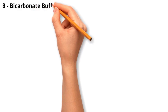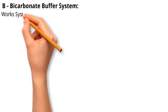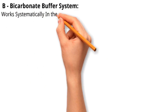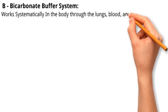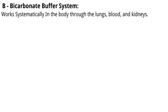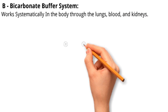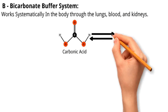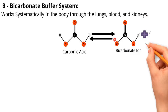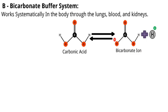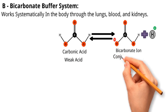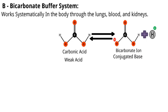The bicarbonate buffer system works systemically in the body through the lungs, blood, and kidneys. This system involves the equilibrium between carbonic acid and bicarbonate ions. Carbonic acid acts as a weak acid in the buffer system, while bicarbonate ions are the conjugate base that accepts the hydrogen ions.